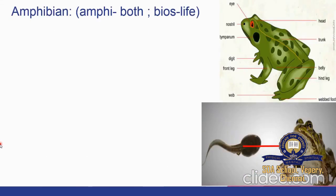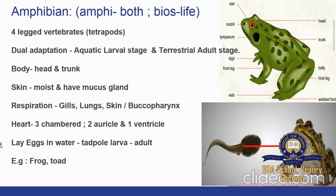Next class is Amphibia. 'Amphi' means both and 'bios' means life — so both life. These are the first four-legged tetrapod vertebrates with dual adaptation to live in both land and water. The body is divisible into head and trunk. The skin is moist with mucus glands. Respiration is through gills, lungs, skin, or buccopharyngeum. The heart is three-chambered with two auricles and one ventricle. Eggs are laid in water and the tadpole larva transforms into an adult. Best example: frog.